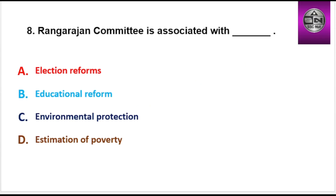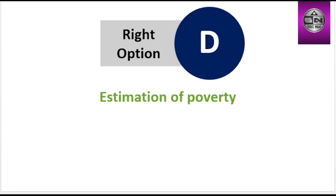Next question: Rangarajan Committee is associated with — Options are election reforms, educational reform, environmental protection, estimation of poverty. Right option is D: Estimation of poverty.